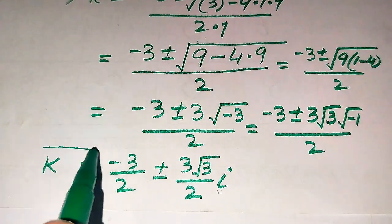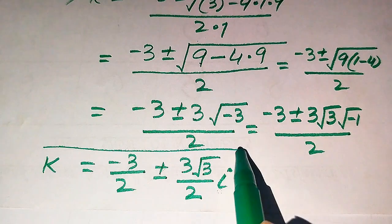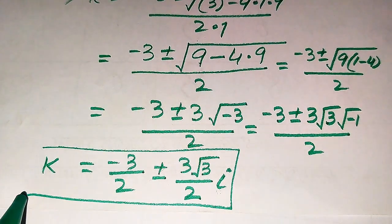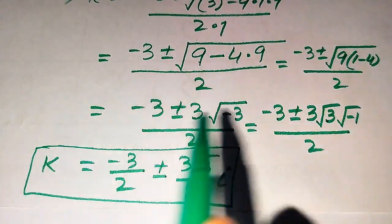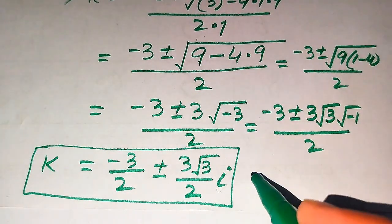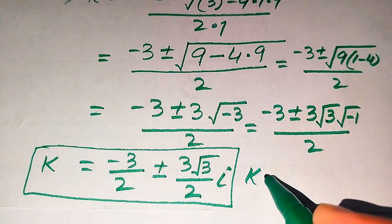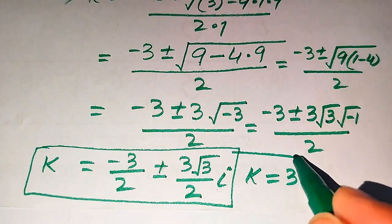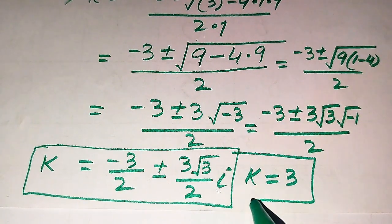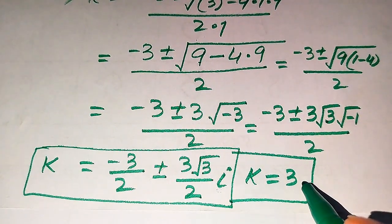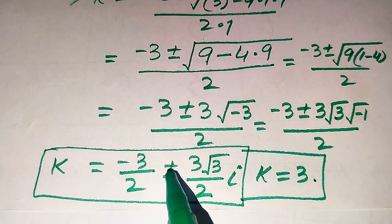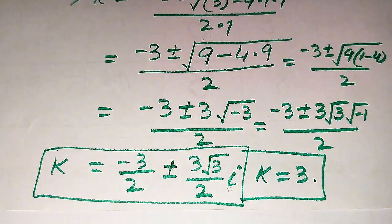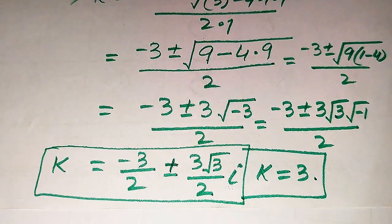These are the other two complex roots of the given equation. The one real root of the given equation is k equals 3, and these are the two complex roots of the given equation.